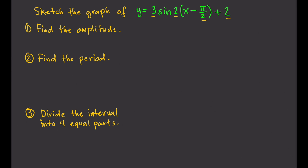To solve this, we first find the amplitude. The amplitude is the absolute value of the number in front of the sine, so that's the absolute value of 3, which is 3. So our amplitude is 3.